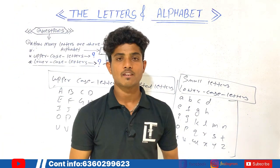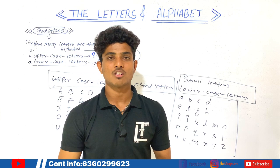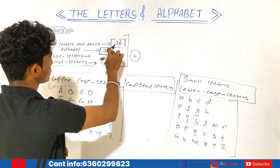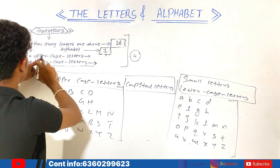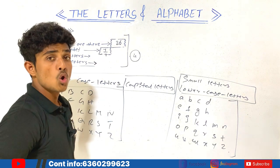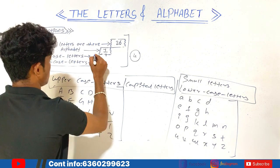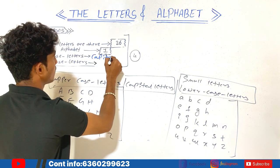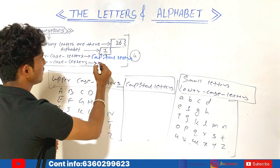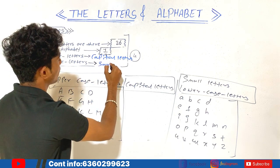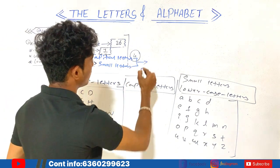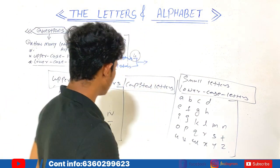So these small letters are the lowercase letters, and the other set are the uppercase letters — also called capital letters. What is the answer to question three? Uppercase letter means capital letters. And what is the answer to question four? Lowercase letter means small letters.